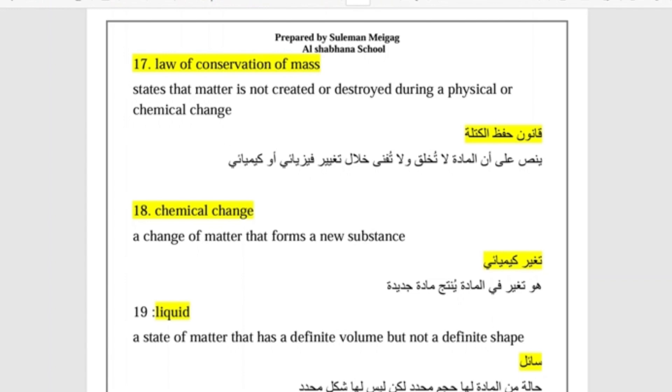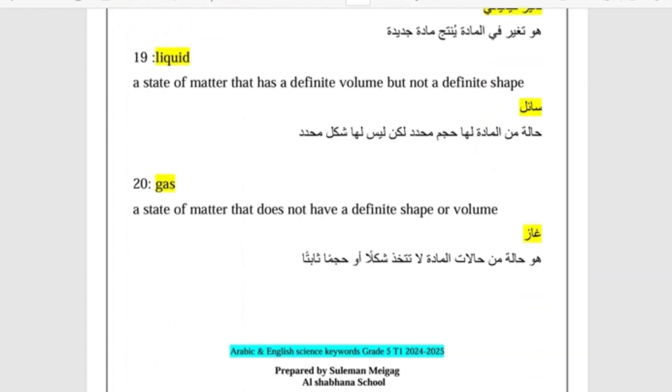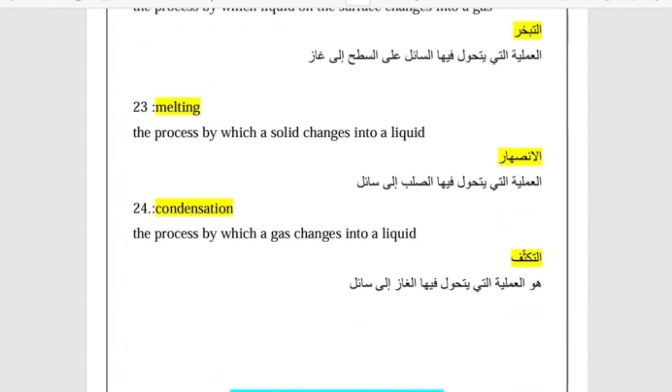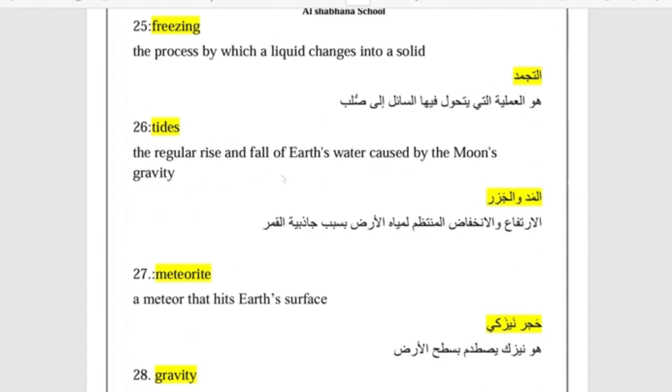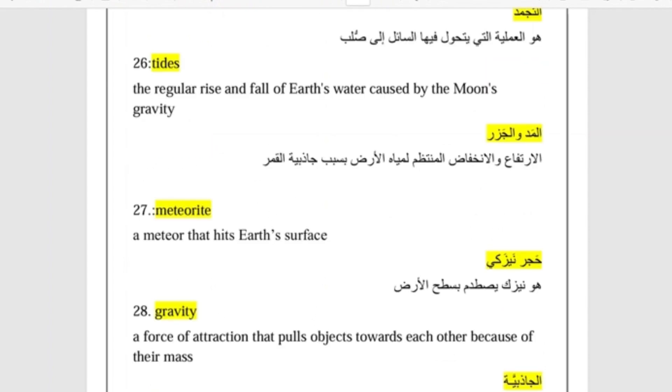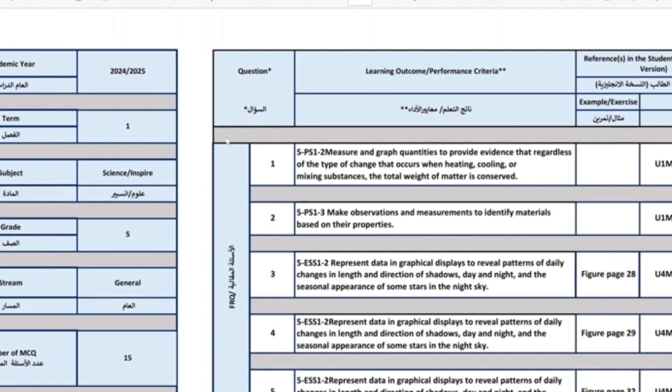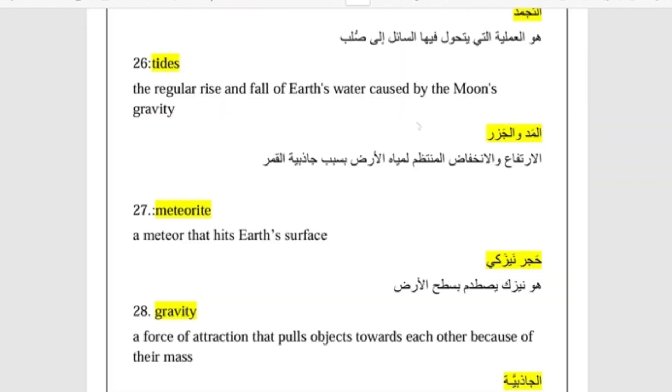And use the vocabulary I've translated for you. So Heikal, Book 1, Book 2, and the vocabulary translations, all the vocabulary in Term 1 I have translated. What is the law for conservation of energy, chemical change, liquid, gas, solid, evaporation, melting, condensation, freezing, tides like the moon's gravity make the water in the sea come and go. See, translated: tides, meteorite, meteor, gravity. So use the vocabulary, I will put everything in WhatsApp, all the Heikal, Book 1, Book 2, and the vocabulary, everything I will put in the WhatsApp group Grade 5. And inshallah do your review and good luck with the exam. Thank you for listening. Assalamu alaykum.